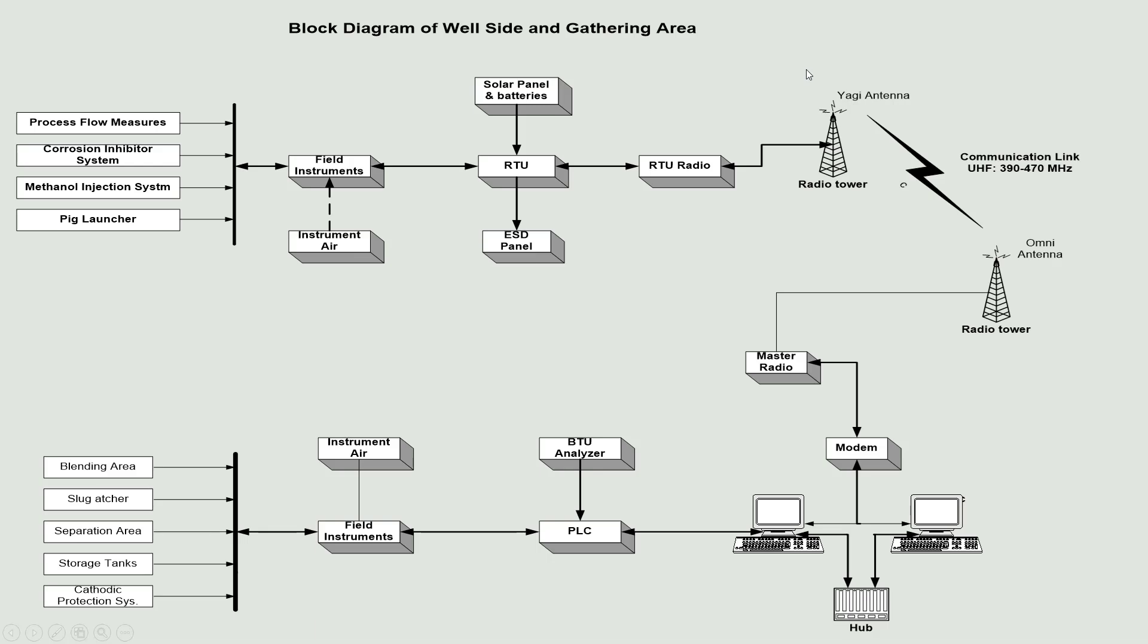SCADA systems for remote sites often include features like predictive maintenance, where algorithms analyze data to predict equipment failures before they occur. This helps in scheduling maintenance activities, reducing downtime, and optimizing operations. Moreover, remote SCADA systems are designed to be rugged and resilient, capable of operating in harsh environmental conditions such as extreme temperatures, high humidity, or remote locations with limited access to power and communication infrastructure.